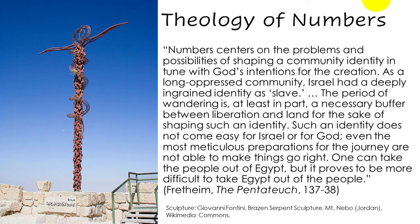This brings us to a reflection on the theology. Terence Fretheim writes: 'Numbers centers on the problems and possibilities of shaping a community identity in tune with God's intentions for the creation. As a long-oppressed community, Israel had a deeply ingrained identity as slave. The period of wandering is, at least in part, a necessary buffer between liberation and land for the sake of shaping such an identity. One can take the people out of Egypt, but it proves to be more difficult to take Egypt out of the people.' We live this in the life of the Church today.